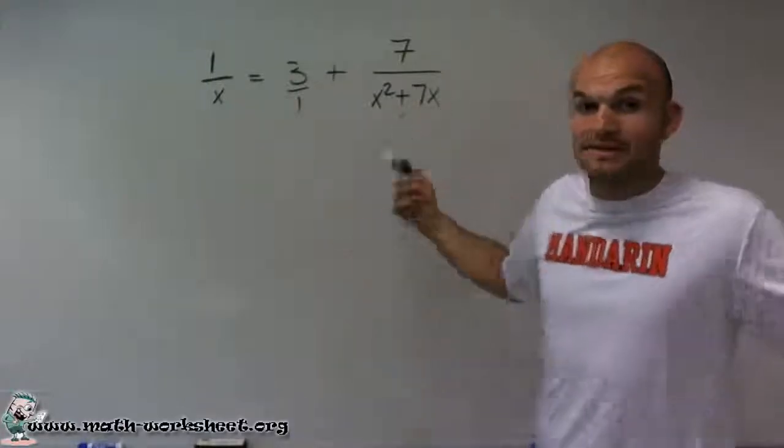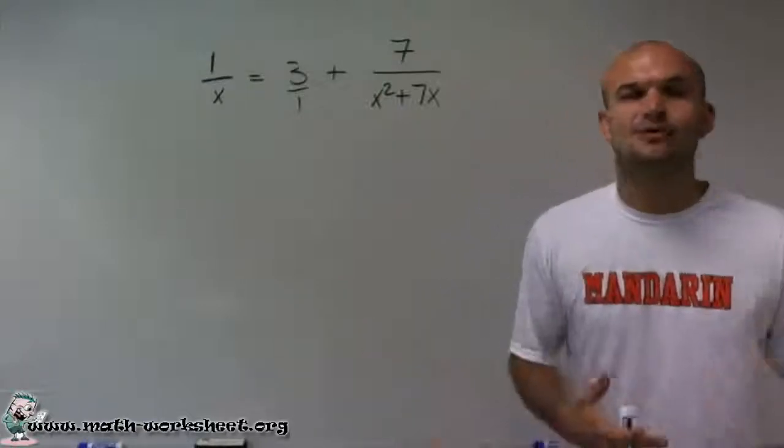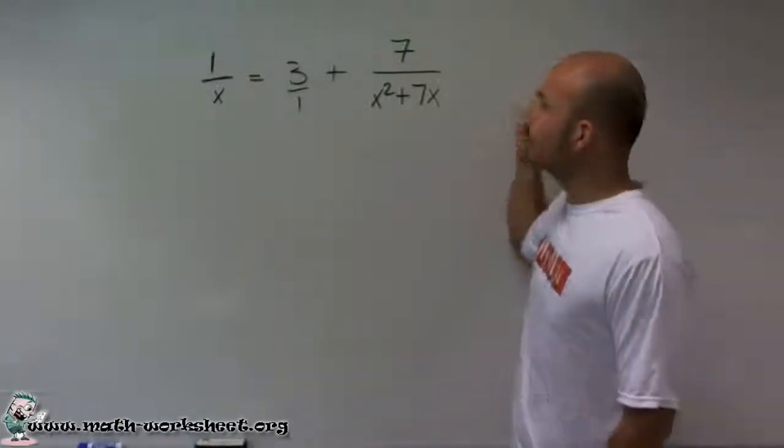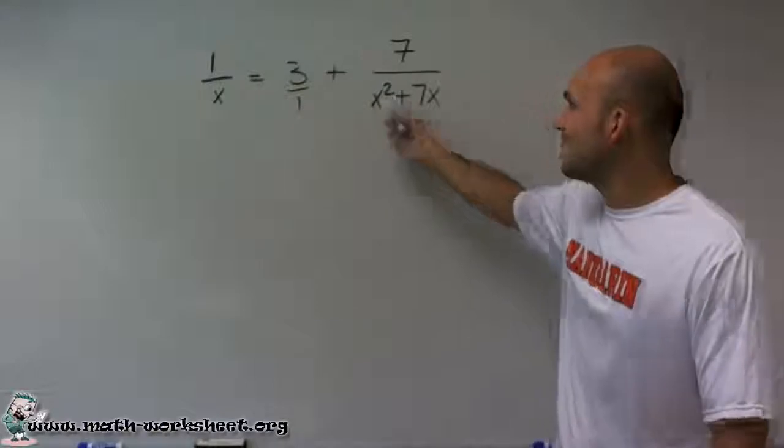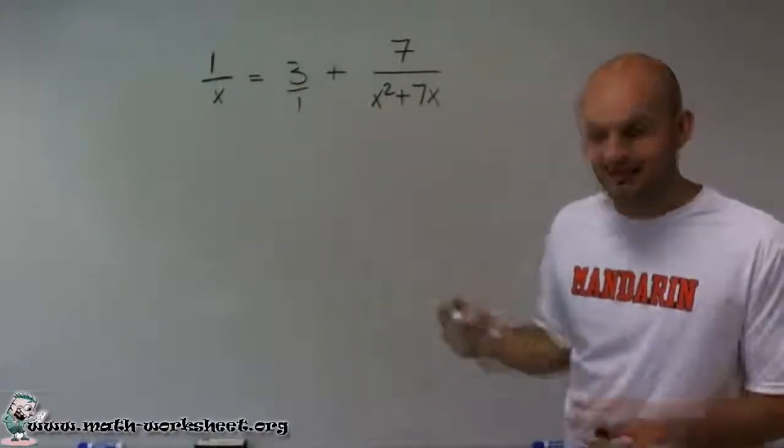But I want to find the least common denominator because I don't want to do extra work. And what I notice is x divides into x squared plus 7x. So actually x squared plus 7x is my least common denominator.